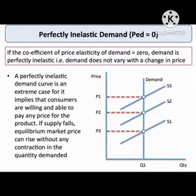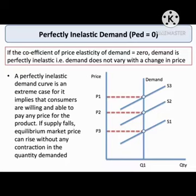Third is perfectly inelastic demand. If the coefficient of Price Elasticity of Demand is equal to 0, demand is perfectly inelastic, meaning demand does not vary with a change in price. A perfectly inelastic demand curve is an extreme case, implying consumers are willing and able to pay any price. If supply falls, equilibrium market price can rise without any contraction in the quantity demanded.